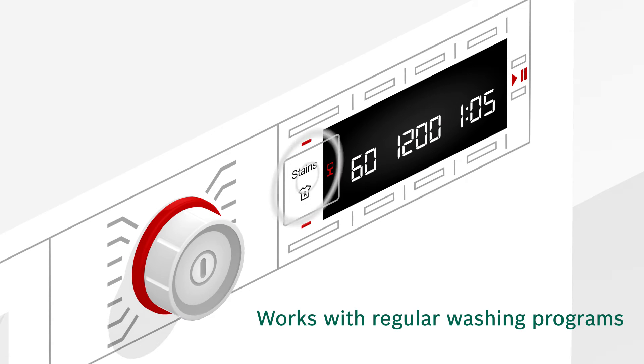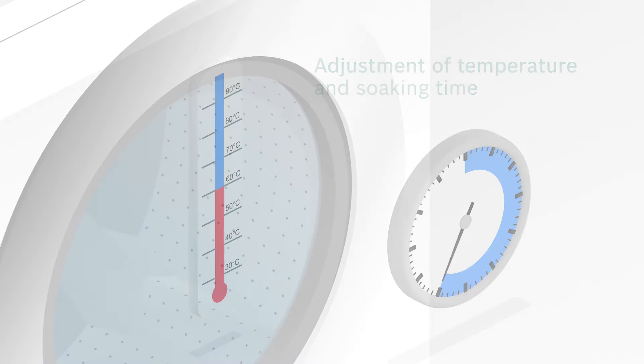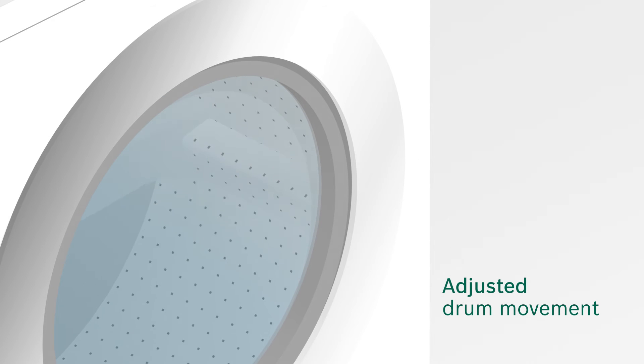You can add anti-stain to regular washing programs. According to the selected type of stain, the temperature or soaking time is adjusted, and even the drum movement is adapted accordingly.